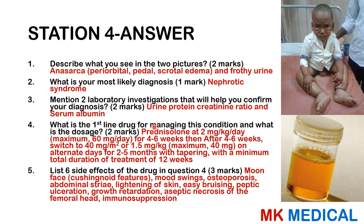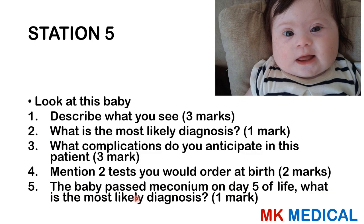The drug of choice is prednisolone or prednisone. Prednisolone is given at 2 mg/kg/day with a maximum of 60 mg/day for four to six weeks, then switched to 1.5 mg/kg on alternate days with a maximum of 40 mg for the next two to five months, then tapered off. Minimum total duration is 12 weeks. Side effects include moon face, mood swings, osteoporosis, abdominal striae, skin lightening, easy bruising, peptic ulceration, growth retardation, aseptic necrosis of the femoral head, and immunosuppression with recurrent infections.